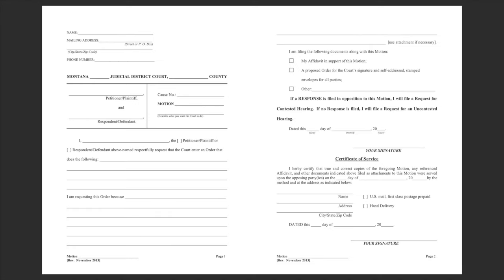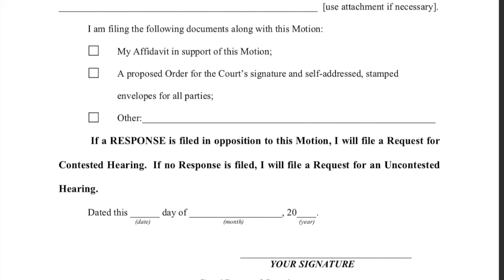The motion is the form you will use to tell the judge what you want and why you should get it. Be sure to tell the judge all of the important facts and to make any argument that helps to support your request for a court order. You should tell the judge what law or laws your motion is based on. You can find Montana laws at courts.mt.gov. You will also tell the judge what other documents are attached to the motion and whether you want the court to hold a hearing on the motion.